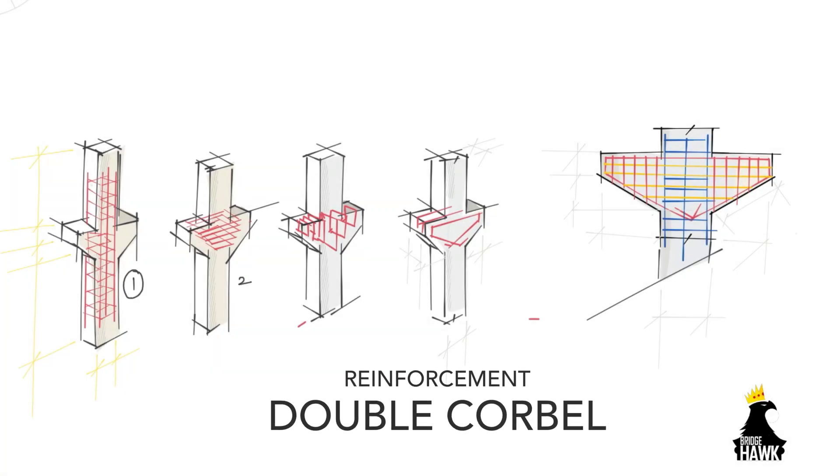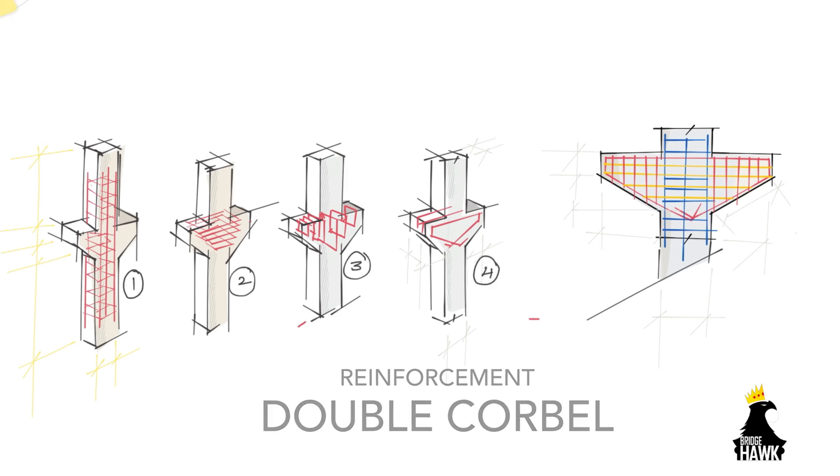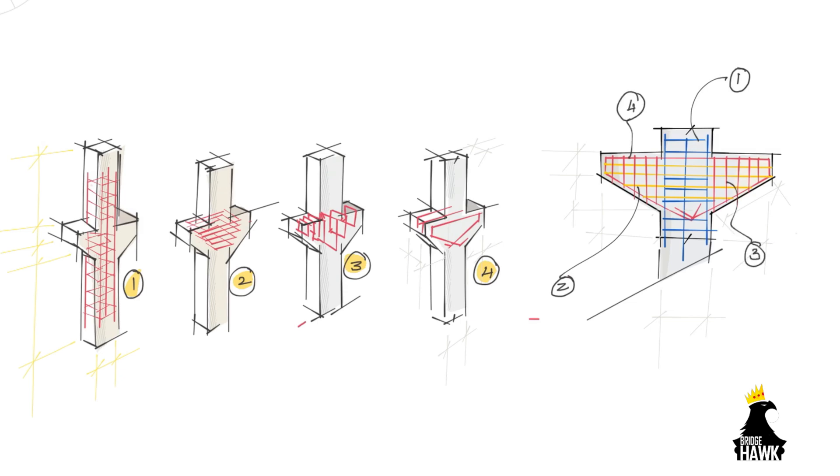Reinforcement for double corbels follows the same pattern as in a single corbel except for the primary reinforcement indicated as reinforcement number four. There may be some slight variations in the shape of main bars. This is done to allow for sufficient development length, but the generic reinforcement shown here remains the same.